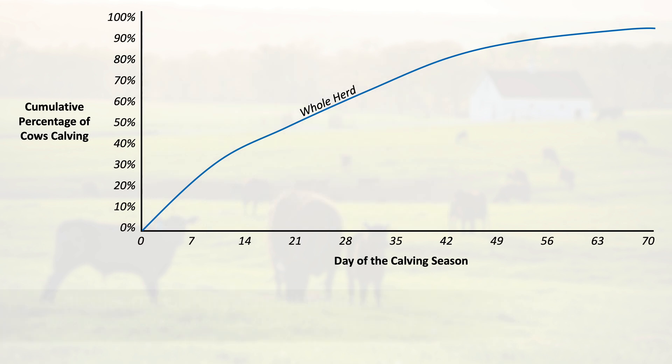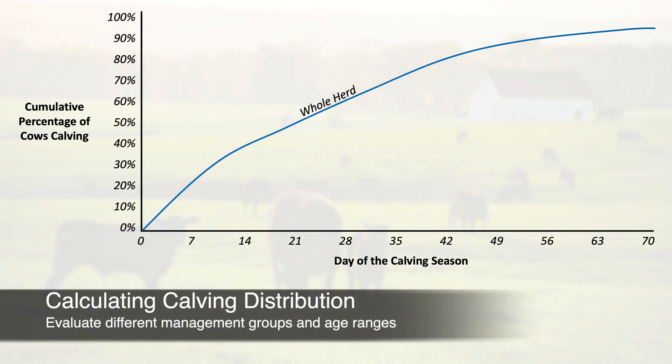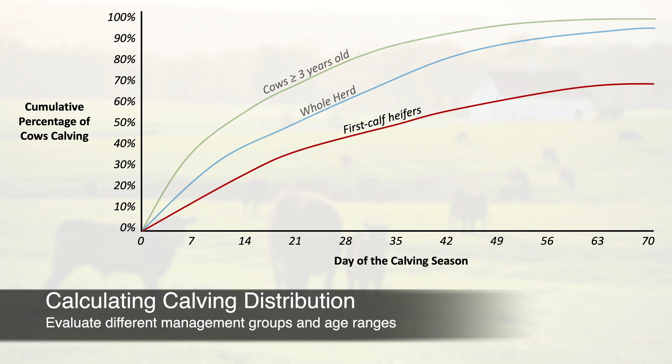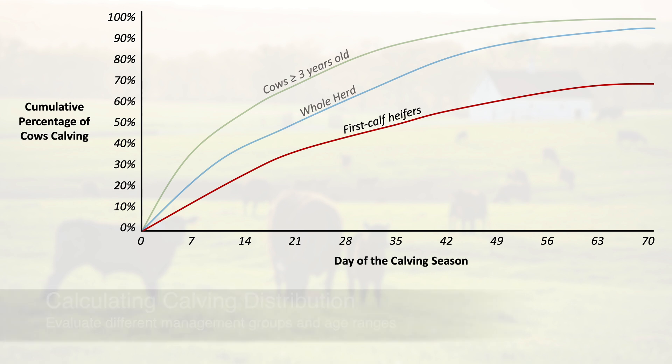Calculating this for your whole herd can give you some idea of your reproductive performance, but break down these results for different management groups or for different age ranges of cows in your herd. You might be able to find some problems you can work to fix next year.